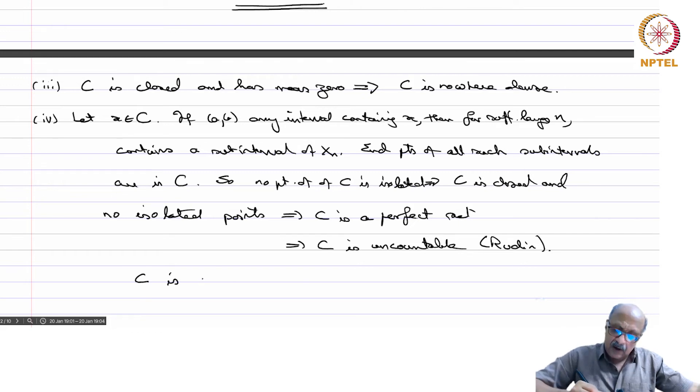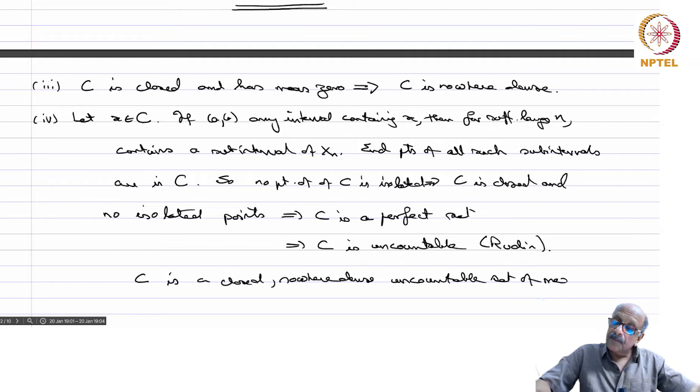So C is a closed, nowhere dense, uncountable set of measure 0. We know that countable sets have measure 0. So the question is, are there uncountable sets of measure 0? So the Cantor set gives you an example.